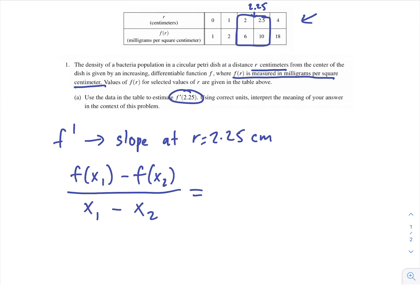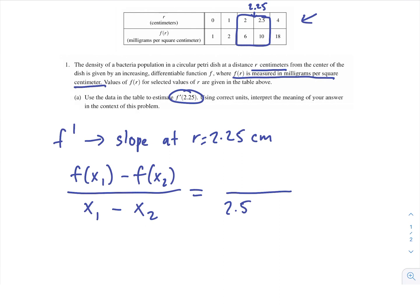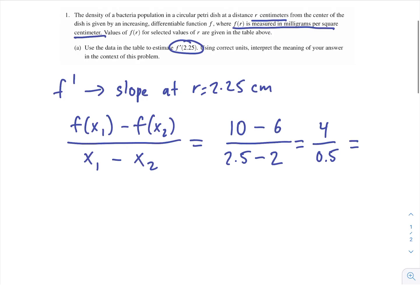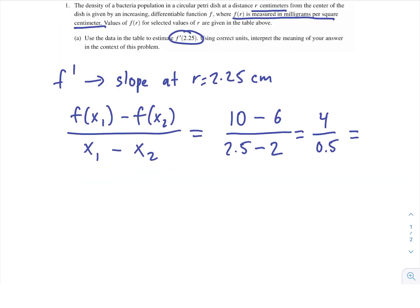So let's say that x1 is 2.5, and then f(x1) would be 10. And then we have x2 would be 2, and then f(x2) is 6. So now this just becomes a simple subtraction and division. So 10 minus 6 is 4 divided by 2.5 minus 2 is 0.5. And when you divide 4 by 0.5, you end up multiplying by 2, so we get 8. So that's our solution.